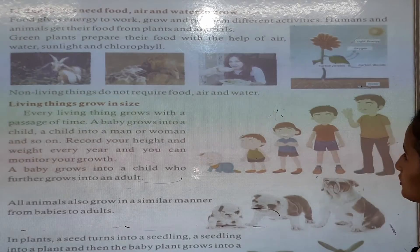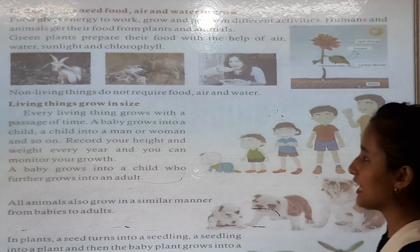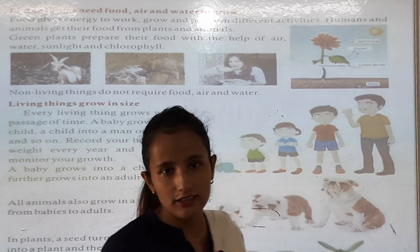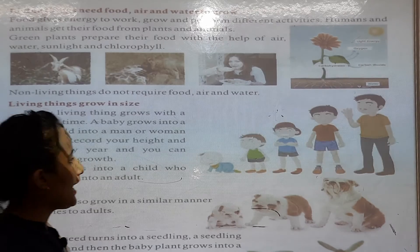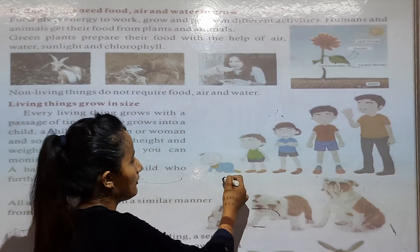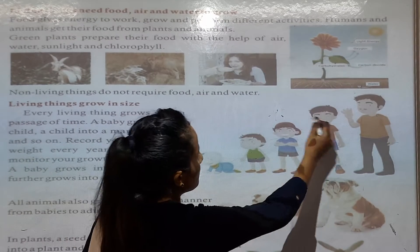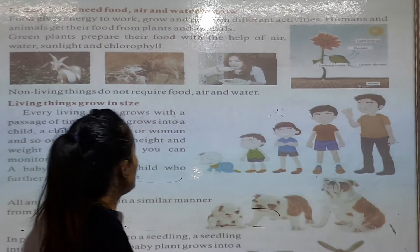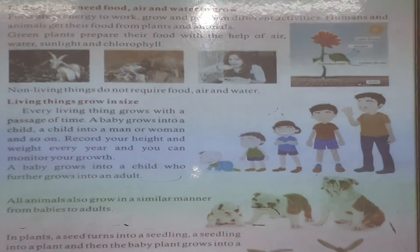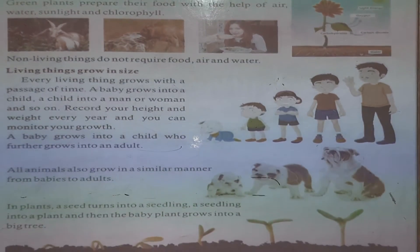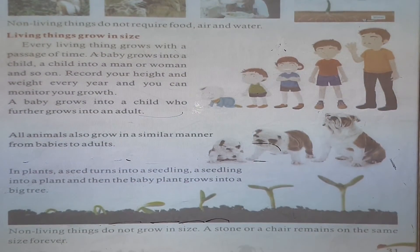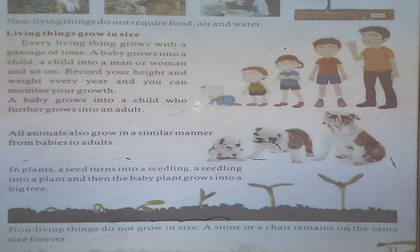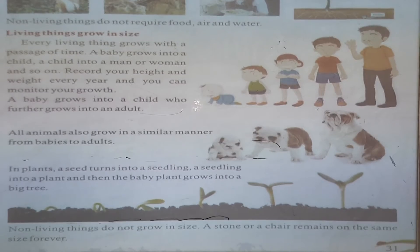Living things grow in size. For example, we grow in size — first you are a baby, then you become bigger and bigger. Every living thing grows with the passage of time. A baby grows into a child, a child grows into an adult.